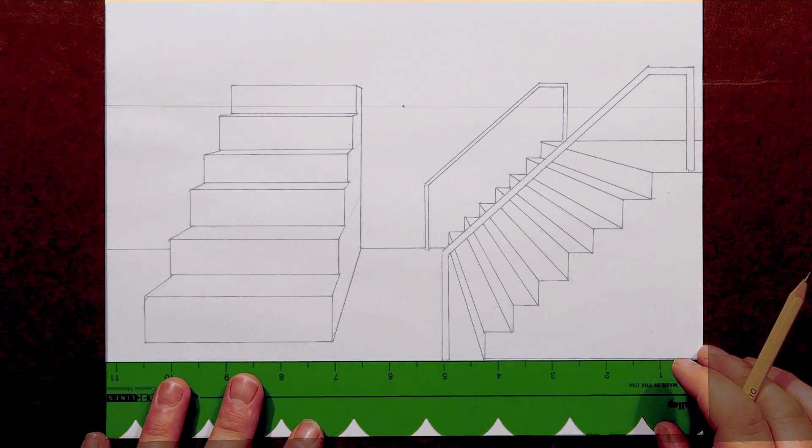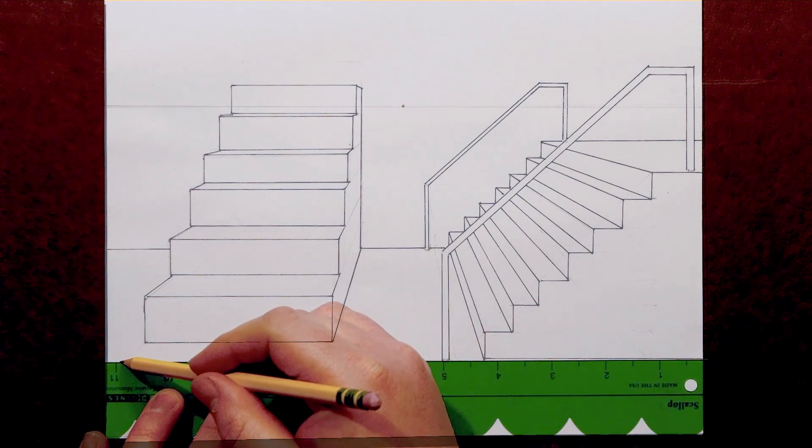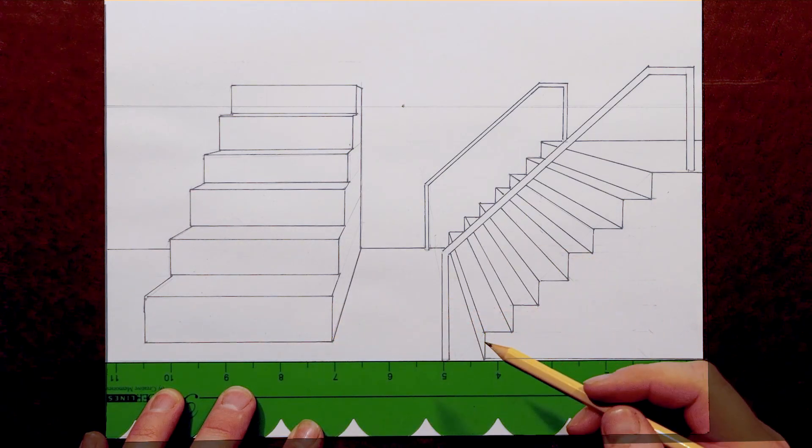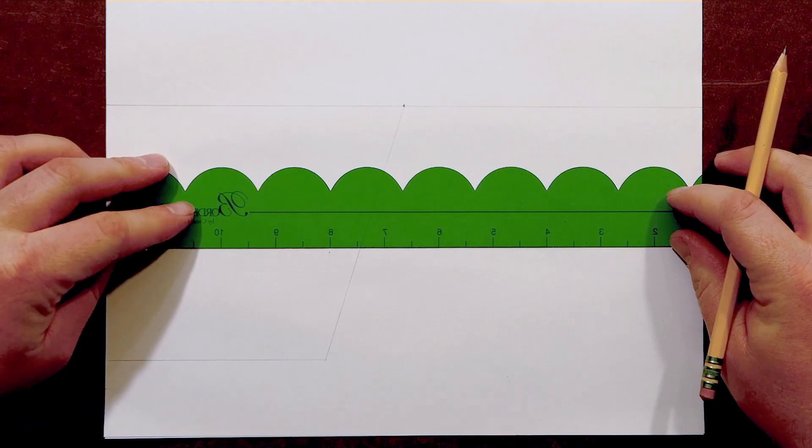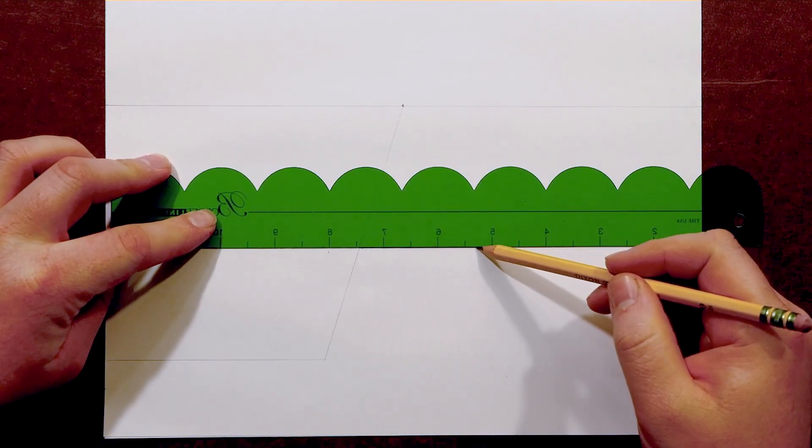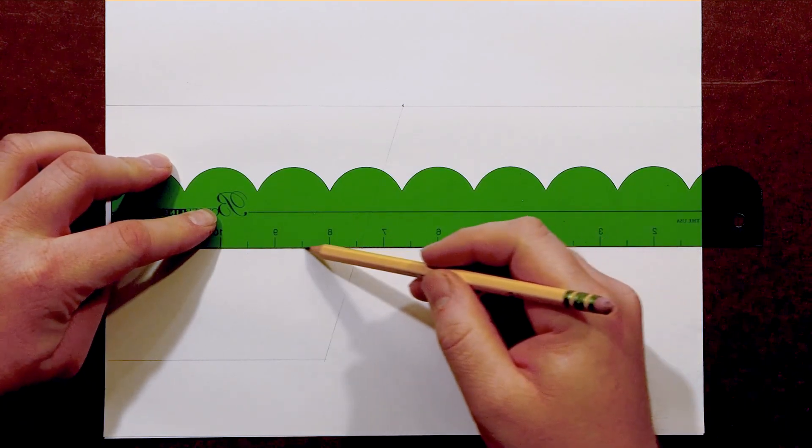I'll begin by locating the base of the left staircase with a horizontal line and then connecting the corner on the right edge to the vanishing point with what we call a converging line. With the horizontal line, I'll describe where the wall begins and where it meets the ground. This will be the back of both staircases.